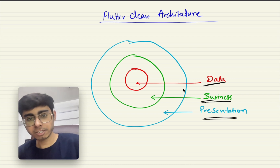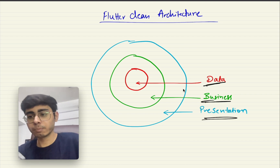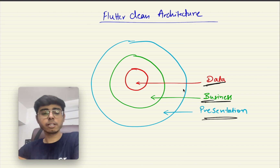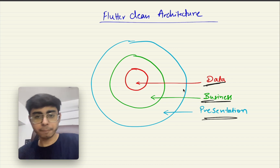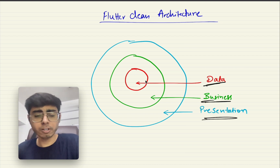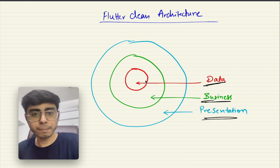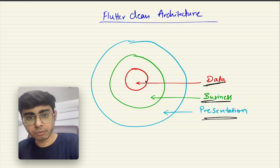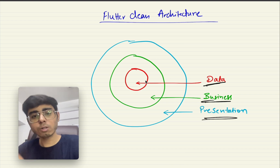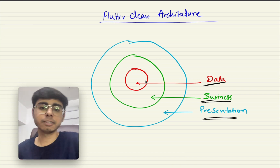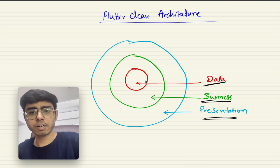What the business layer does is it takes an event from your presentation layer. Let's say you click a button and want to make an API call — it takes the required data from your presentation layer and passes it on to the data layer. The data layer is where API calls are made and network work is done. If you have a local database in your mobile phone, that work is also done at the data layer — it is at the center of the whole clean architecture.